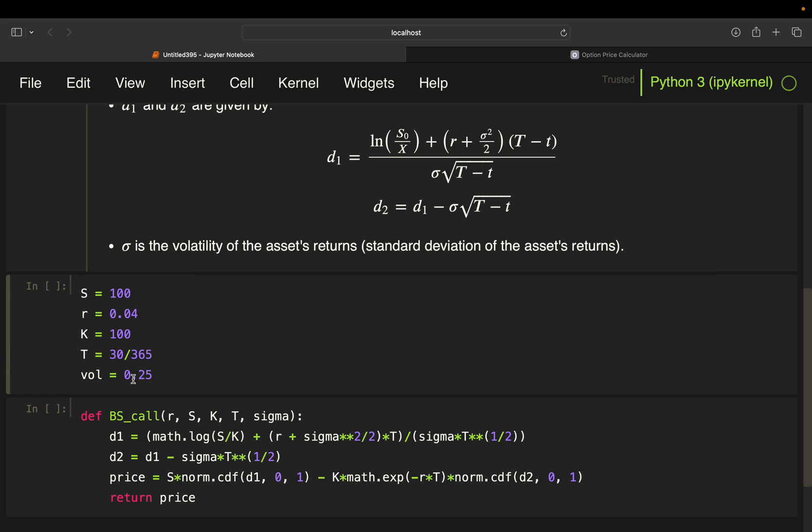and we got a volatility of 25%. Just to recap, this is in years, this is in years, so this is an annualized volatility, this is an annualized risk free rate. So, let's execute that, so we got all assumptions here.